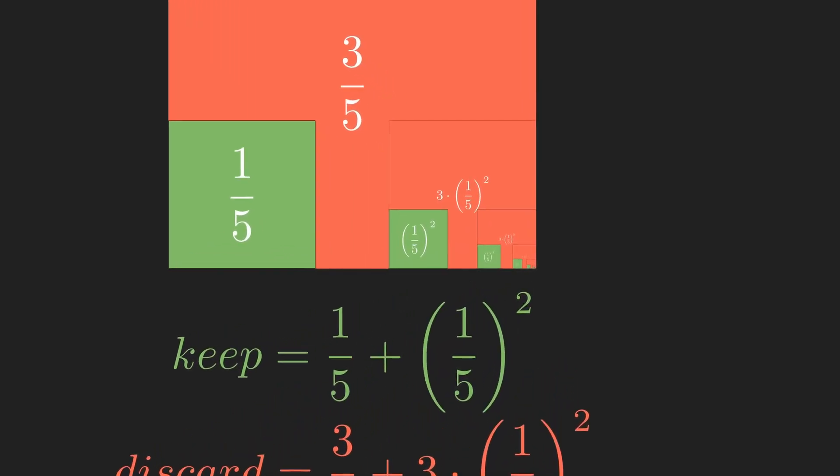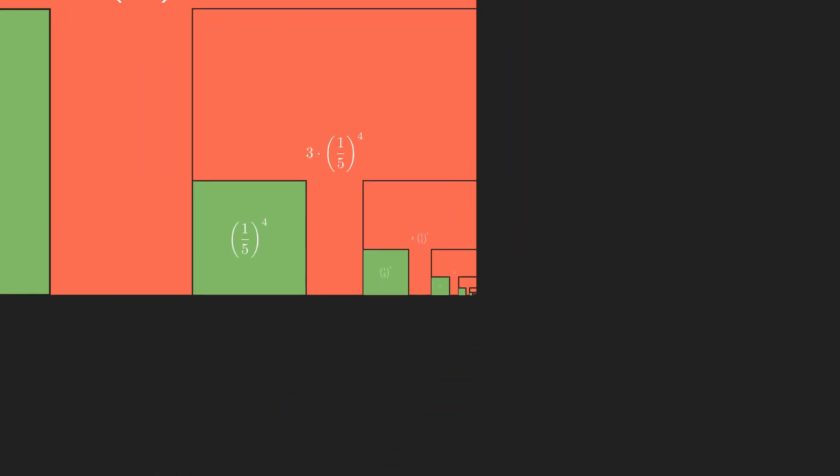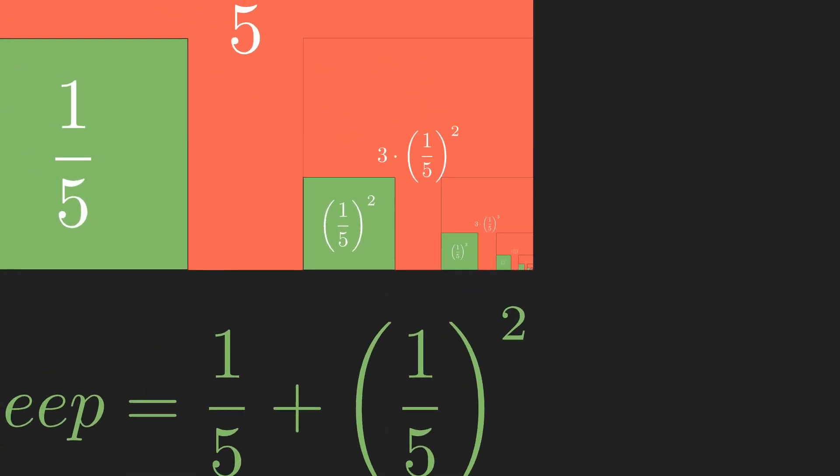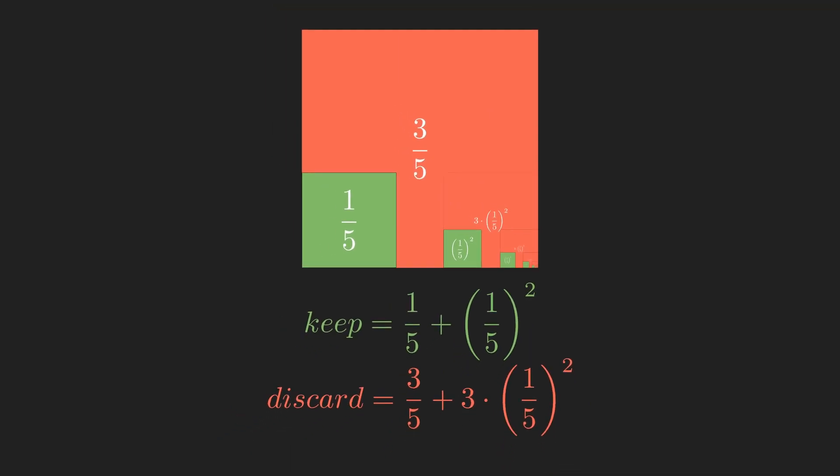We can repeat this action forever, on smaller and smaller squares. If we did this infinitely many times, our working square would disappear, leaving us just with the keep and discard piles.